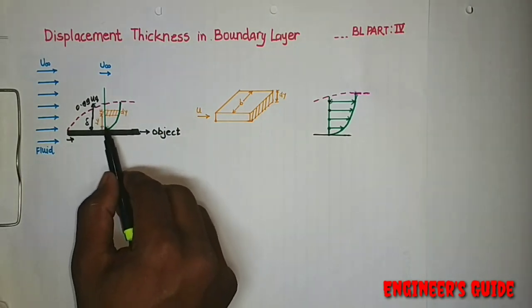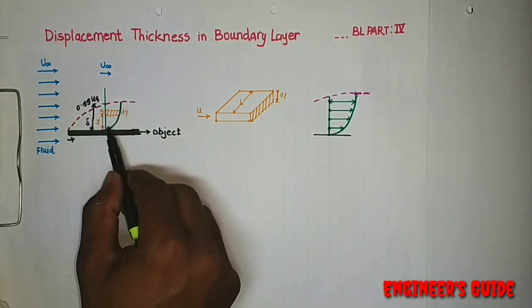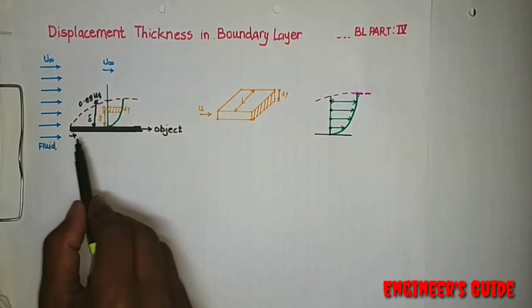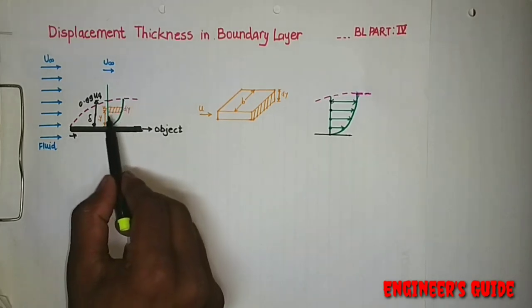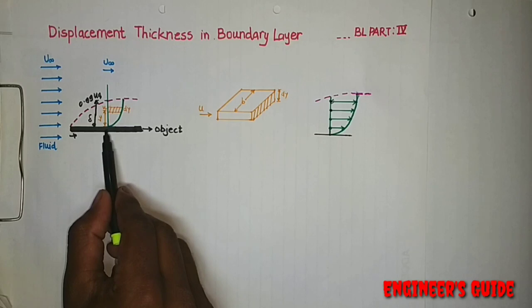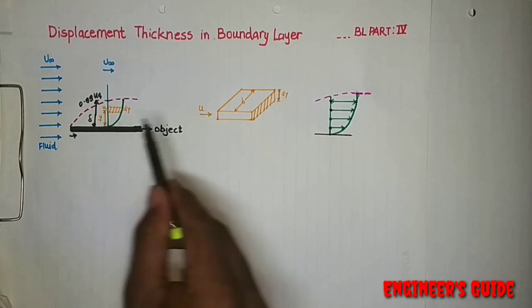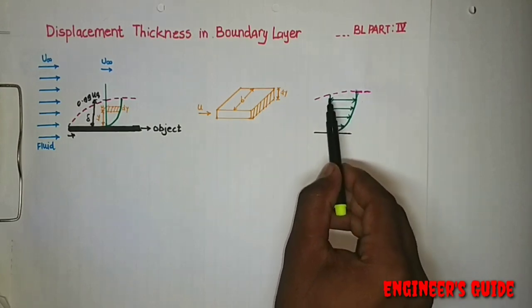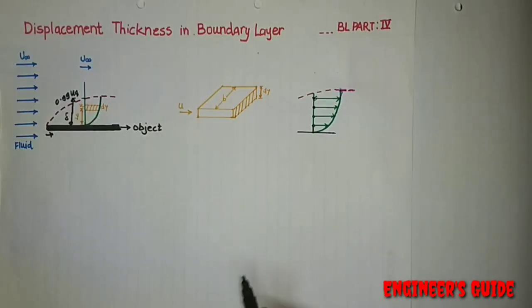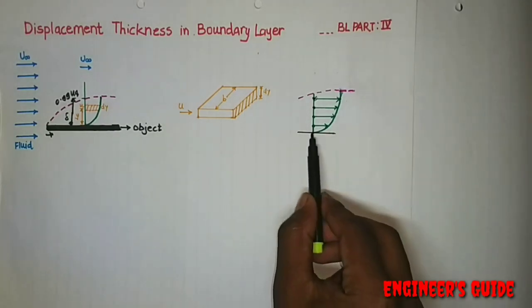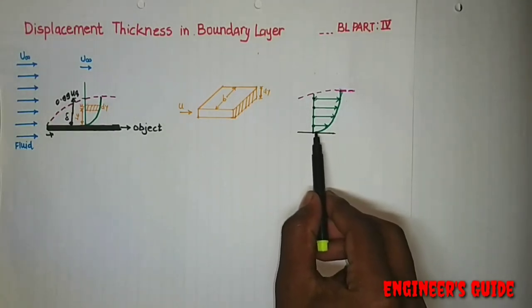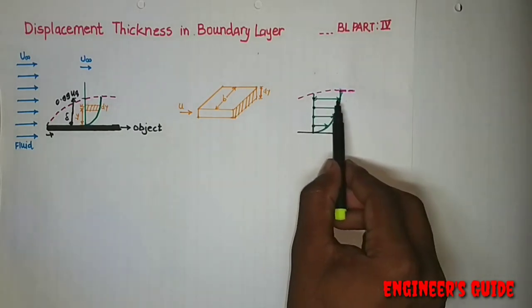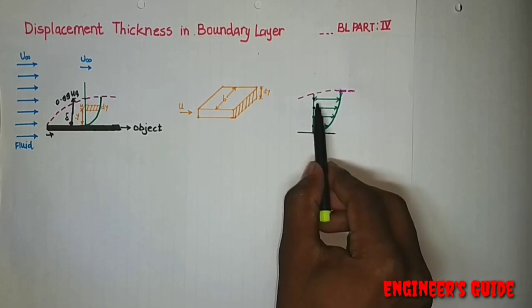Now I want to make you clear about this curve — what it actually indicates. Fluid is flowing over the object surface. This graph shows the velocity at this particular x. To understand better, I have drawn this figure separately. This length determines the magnitude of the velocity at this point. As you can see, at the surface there is no length, so velocity is 0. As we go above, the lengths are increasing, so the magnitude of the velocity increases.